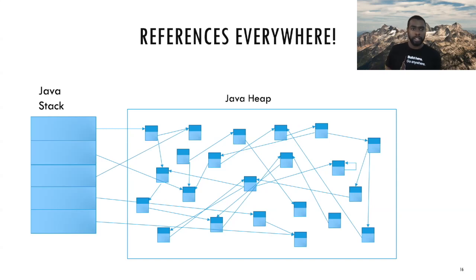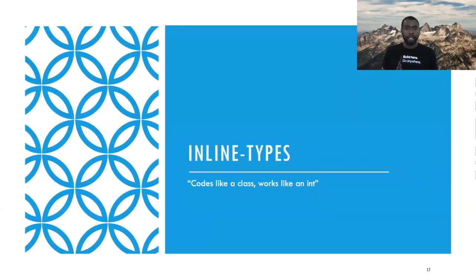The solution to this is inline types. Inline types are essentially objects that behave like primitives. Hence the tagline: codes like a class and works like an int. The important part here is that it works like an int, specifically the performance aspects of an int. Inline types - this is the current working name. In the past it's been called value types, so it refers to the same thing.